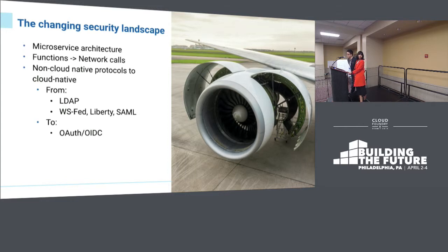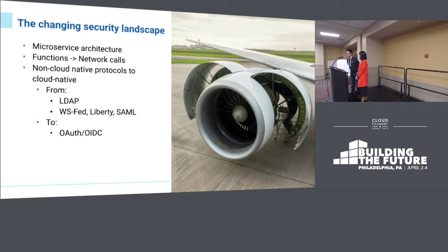We'll also be talking broadly about the move from monoliths to microservice-based architecture. In this kind of move, what used to be security for functions within the same compute space moves into security for network calls from microservice to microservice. That means protocols that existed in the past no longer function as well between separate microservices, and new protocols offering federation fit better into the new context.